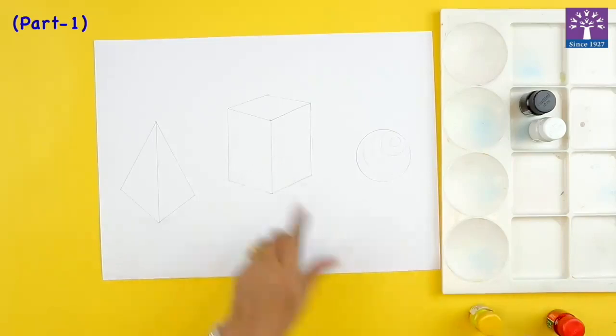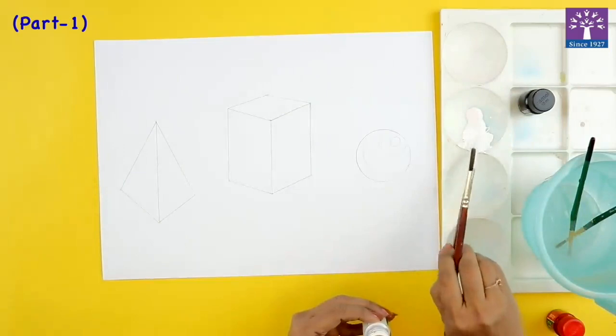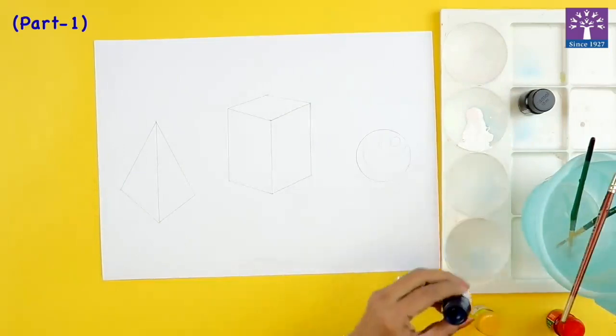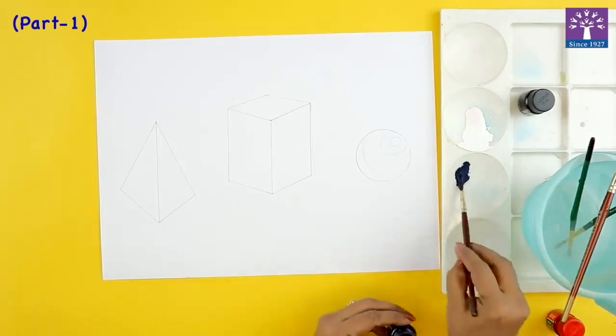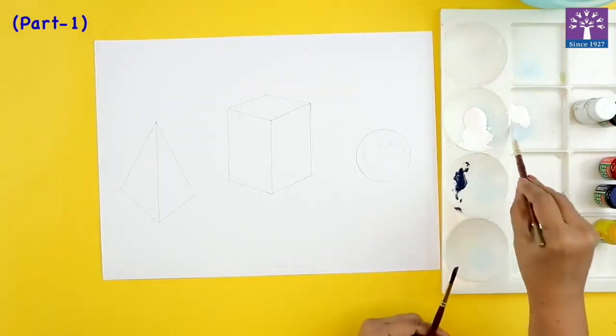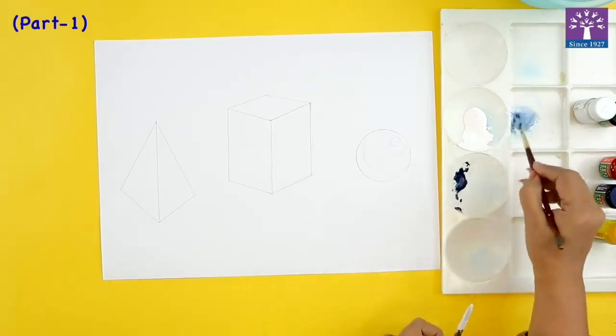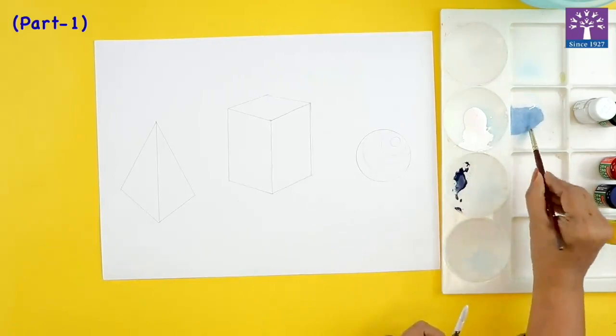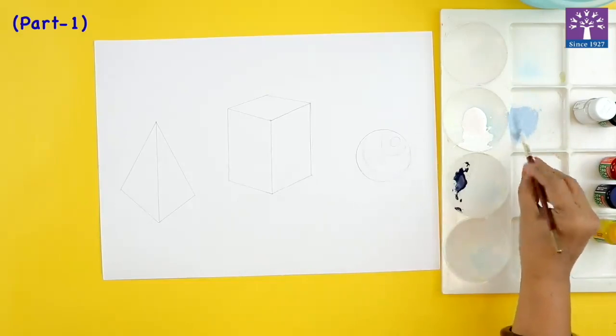So we'll start with the cuboid first. I'm taking white paint. I'm keeping white paint ready in my palette. And with another brush I'm taking blue color. So what I'm going to do is I'm going to take white color over here and mix it with some blue. See now I've created a tint of that color.